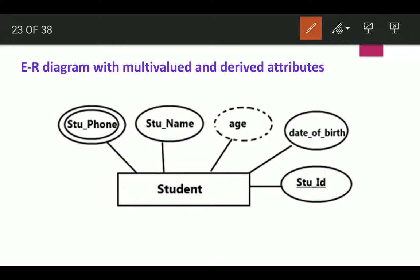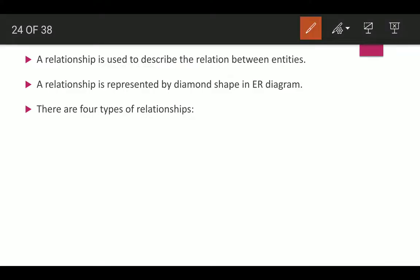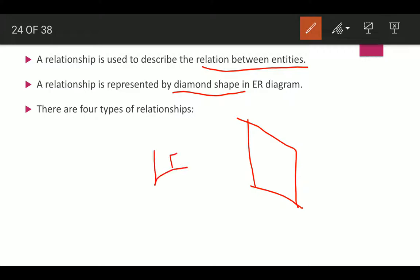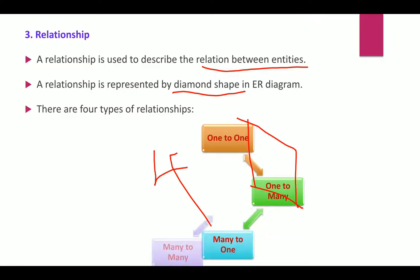Next, the most important component — relationship — is used to describe the relation between entities. In a diagram, it is represented using a diamond shape. There are four types of relationships: one-to-one, one-to-many, many-to-one, and many-to-many.